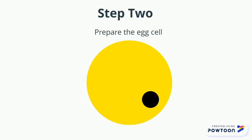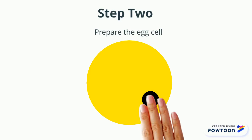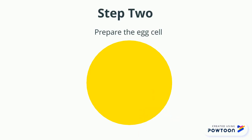The second step is to prepare the egg cell. An ovulated egg is obtained by an ultrasound-guided transvaginal needle aspiration in a procedure similar to in vitro fertilization. Then the egg's nucleus is removed using an inverted microscope, UV light, and a glass needle. This setup minimizes damage to the delicate egg and is fairly easy to manipulate.